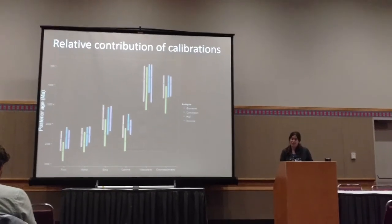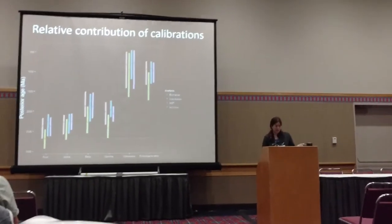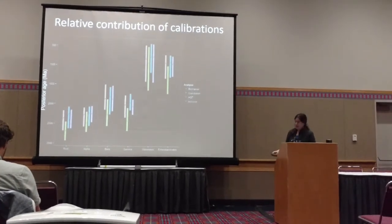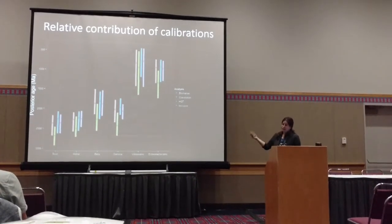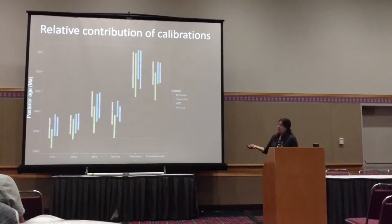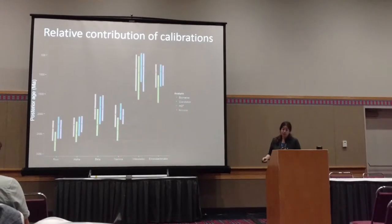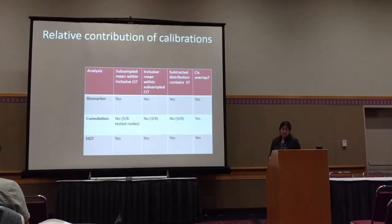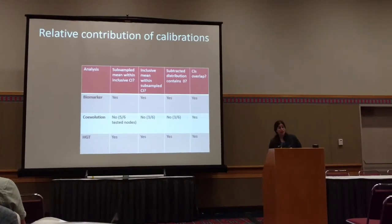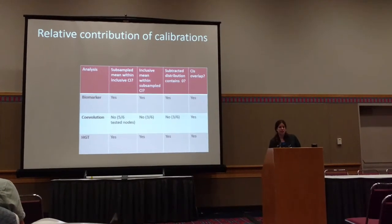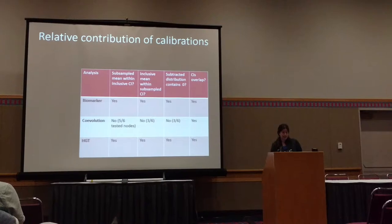We don't yet have convergence for the run where mitochondrial calibrations were removed — that was still in the burn-in last night. These are showing the confidence intervals from molecular clock analysis where each calibration type was removed versus inclusive with everything included. The only ones that differed were actually the ones where we removed the co-evolutionary calibrations.